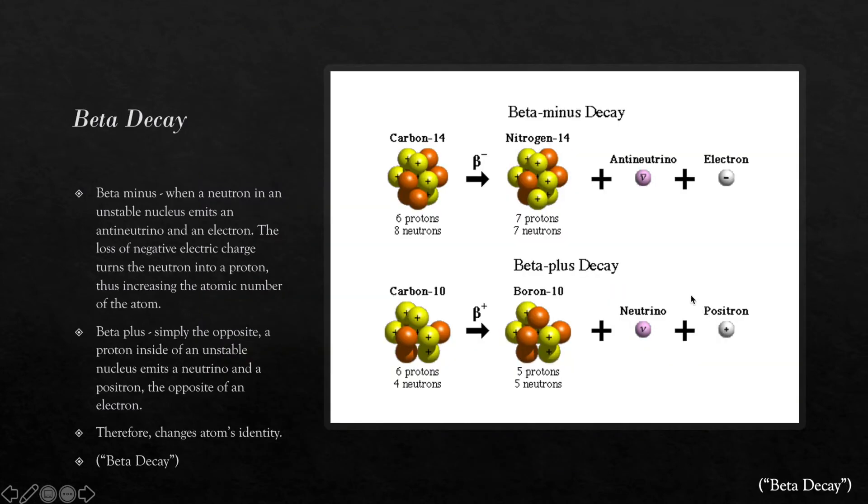The second kind of beta decay is simply the opposite. A proton inside of an unstable nucleus emits a neutrino and a positron, the opposite of an electron, converting the proton into a neutron and lowering the atomic number of the atom, for example, carbon-10 into boron-10.